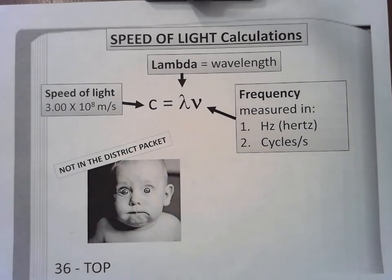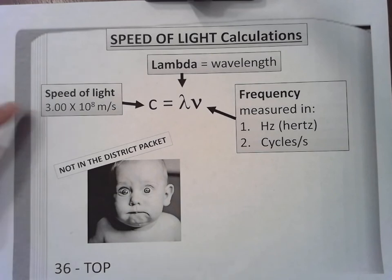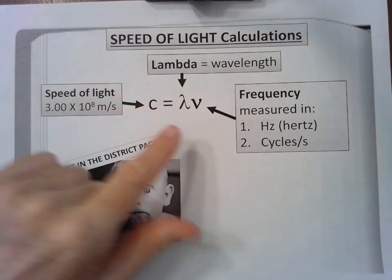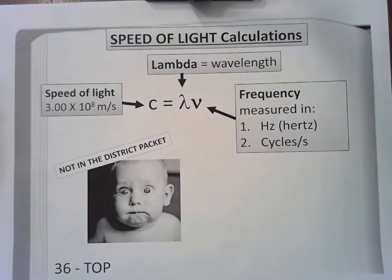Speed of light is equal to wavelength times frequency. The speed of light is actually given to you — you'll never solve for C; it is a constant. We know what it is. We're going to use it to either solve for wavelength or solve for frequency. The speed of light is known to be 3.00 times 10 to the 8 meters per second.